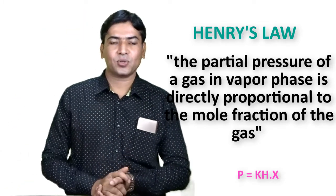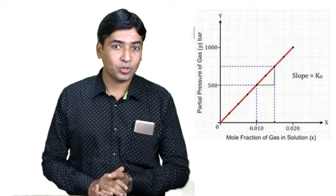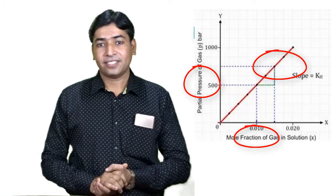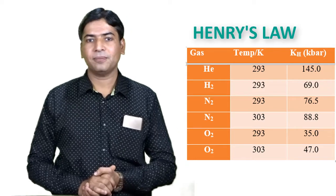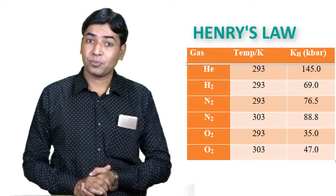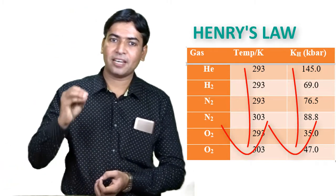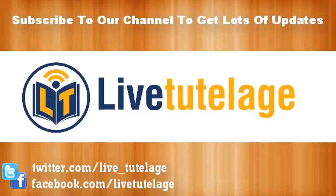K_H is Henry's constant, which depends on the nature of the gas at constant temperature. When a graph is plotted between partial pressure and mole fraction, a straight line is obtained. Different gases have different K_H values at a given temperature. From the data table, it is clear that as temperature increases, the K_H value of gases also increases, confirming that the solubility of gases decreases with increase in temperature. Note that the solubility of solids and liquids is not affected by pressure.